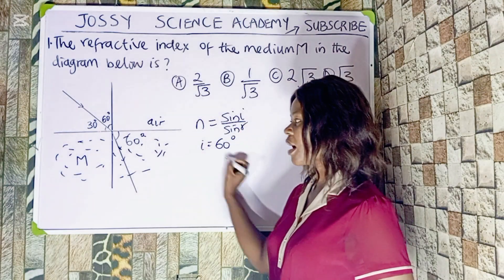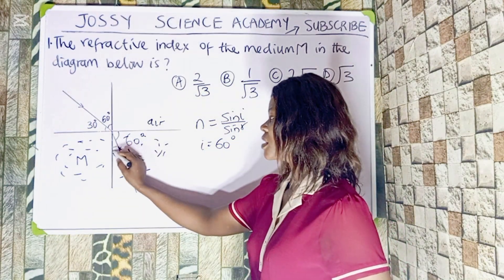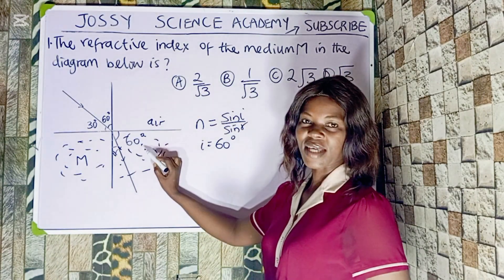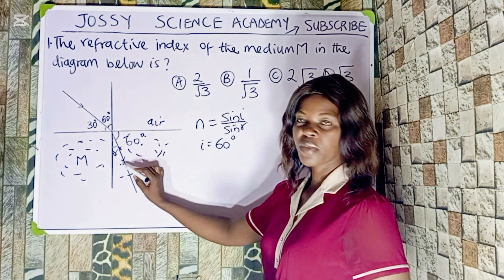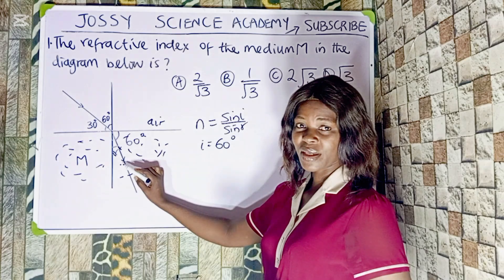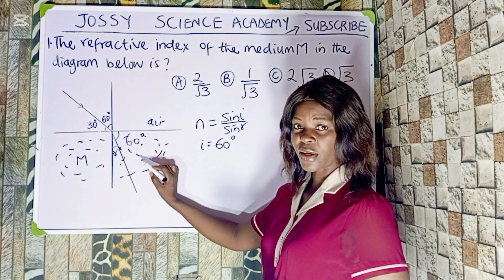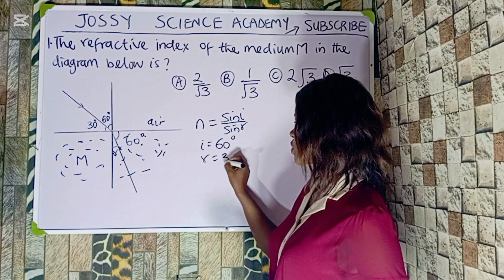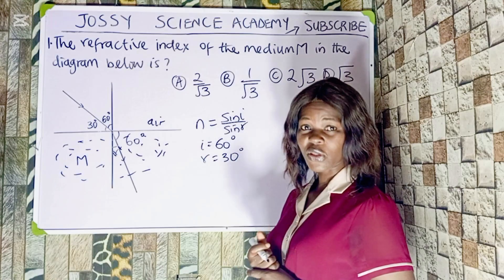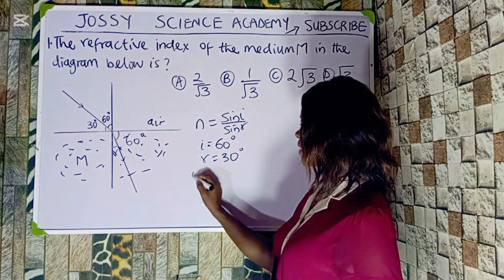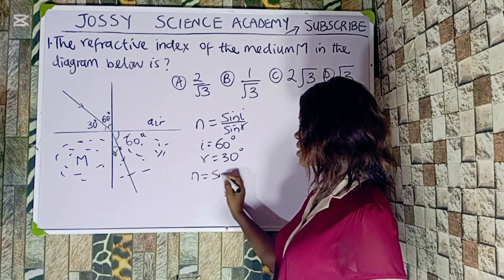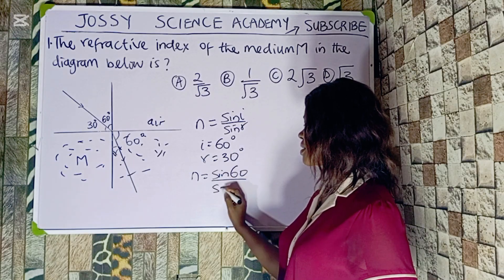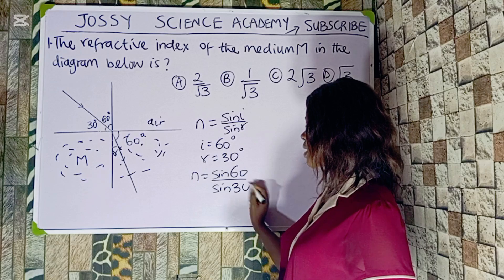My angle of refraction R, we don't have it directly. If this is a right angle and this angle is 60, the remaining angle is 90 minus 60, which gives 30. So my R is equal to 30 degrees. Substituting into the formula, N is equal to sin 60 all over sin R, which is sin 30.